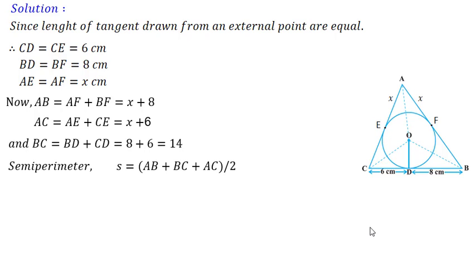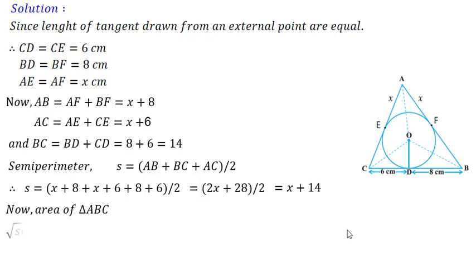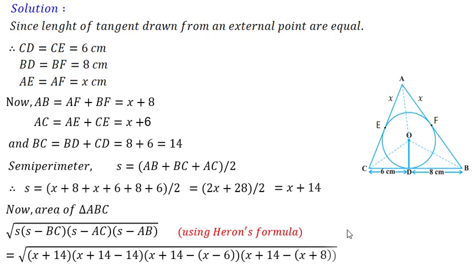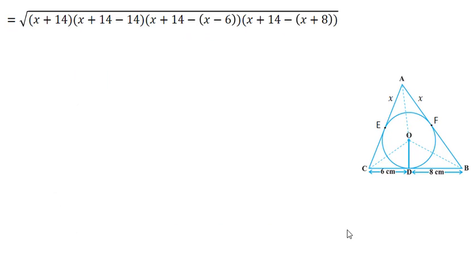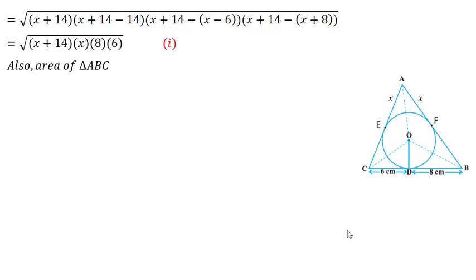Now I will find the semi-perimeter. Semi-perimeter is the sum of all 3 sides divided by 2. Putting in the respective values, I get S = X + 14. Now by using Heron's formula, area of triangle = √(S · (S−BC) · (S−AC) · (S−AB)). Subtracting each side from the semi-perimeter and simplifying, I get the area of triangle ABC as √((X+14) · X · 8 · 6). This is one expression for the area of triangle ABC.